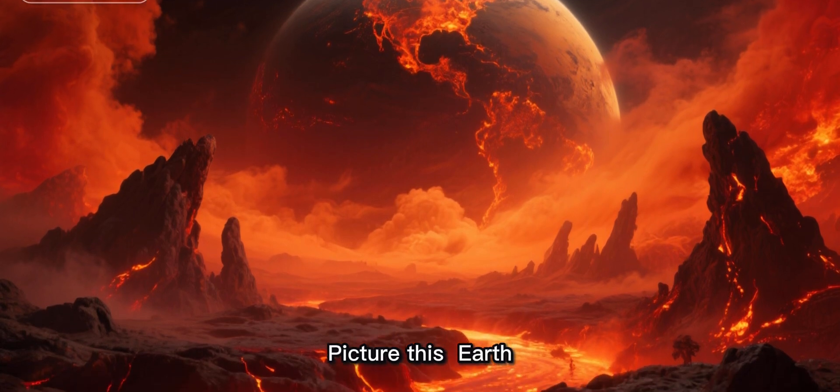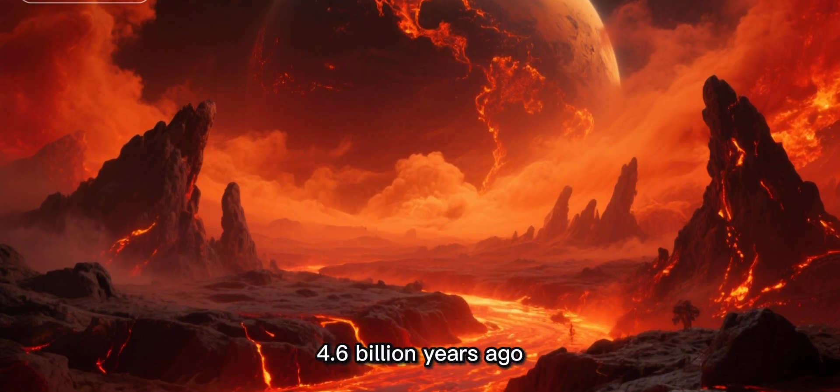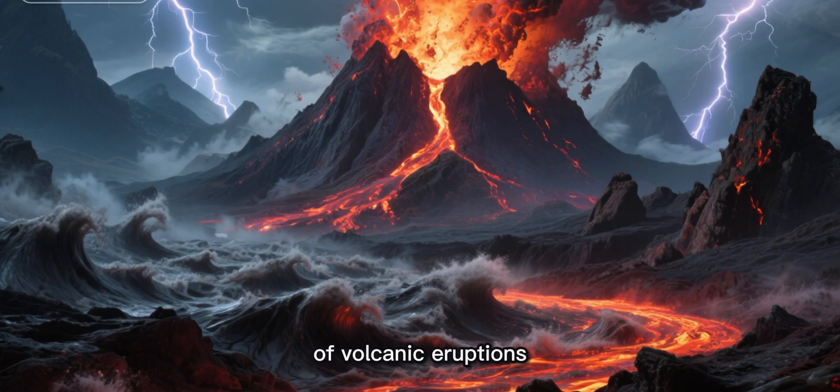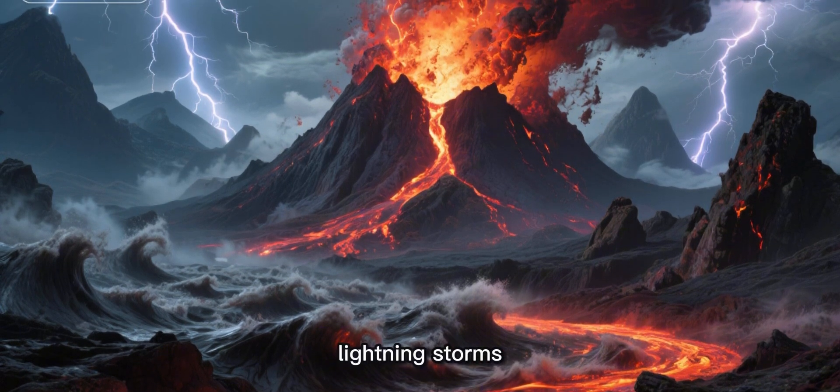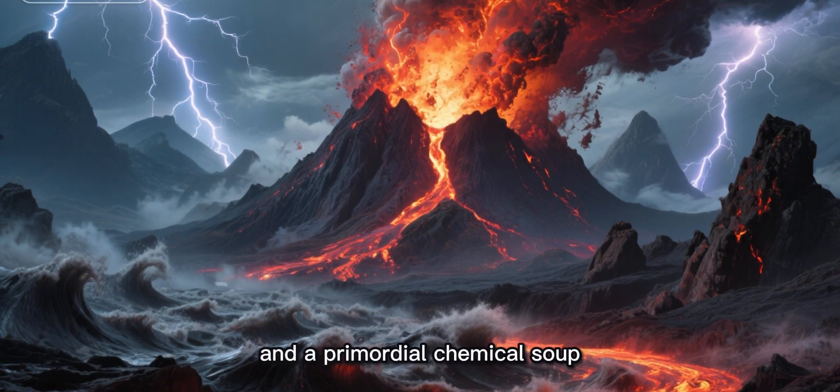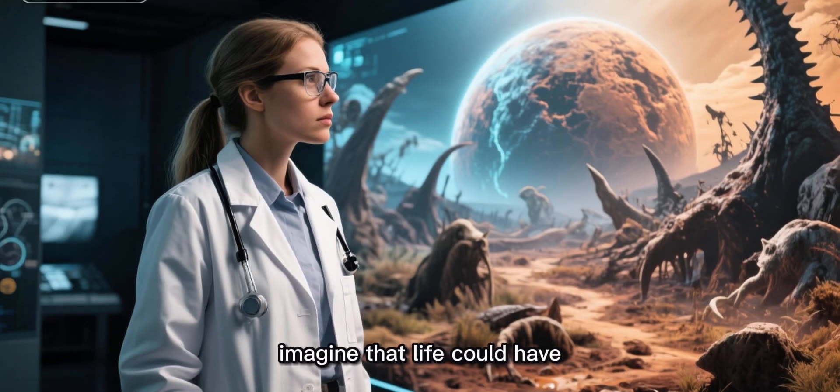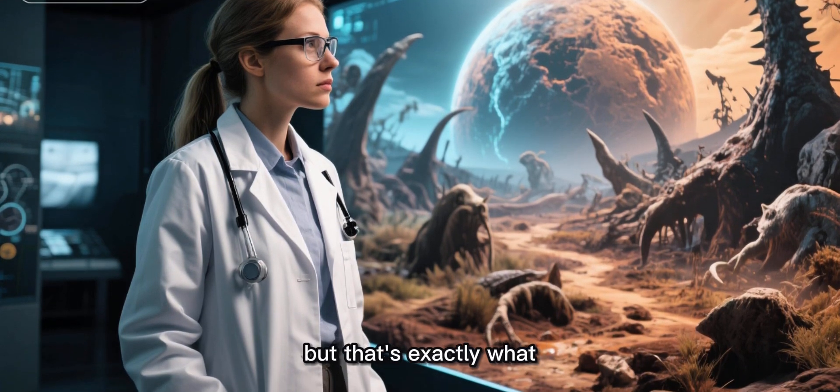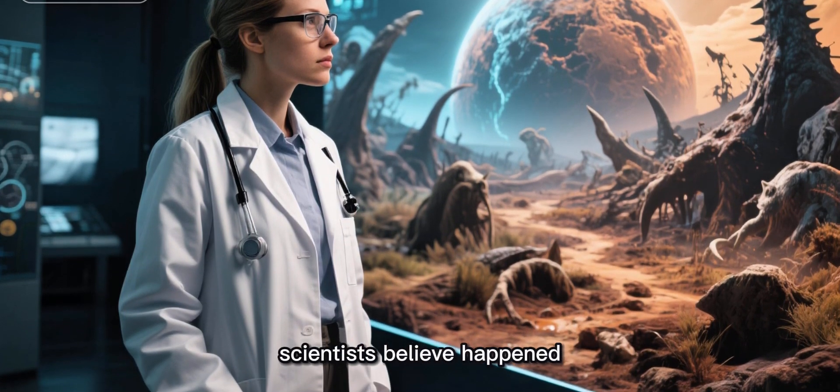Picture this: Earth, 4.6 billion years ago. A hostile environment of volcanic eruptions, lightning storms, and a primordial chemical soup. It's hard to imagine that life could have sprung from such chaos, but that's exactly what scientists believe happened.